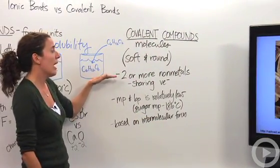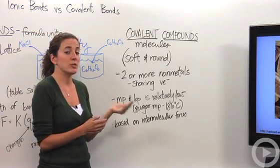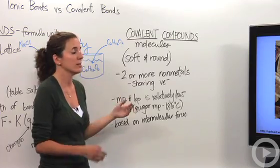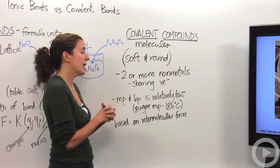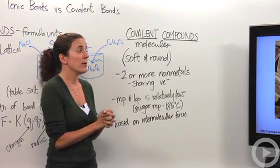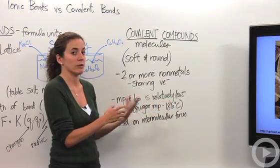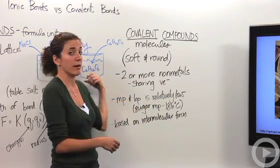When covalent compounds come together, we call those things molecules. They're different because you can actually have one molecule in your hand versus ionic compounds, you can't. They're composed of two or more non-metals. They are not ions at all. The reason they're called covalent is because they're sharing their valence electrons together. They're not exchanging them as they are in ionic compounds.